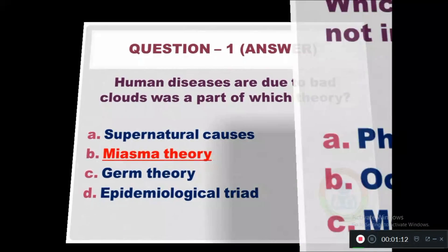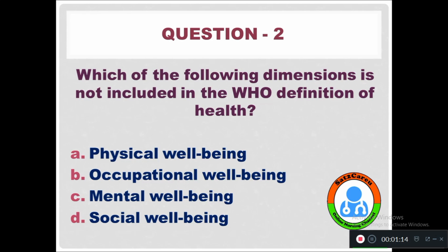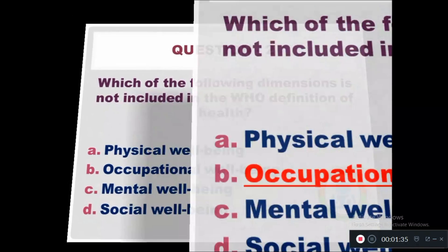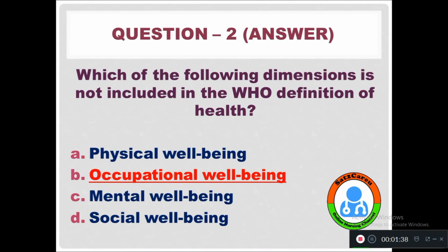Question 2: Which of the following dimensions is not included in the World Health Organization definition of health? Option A: Physical well-being. Option B: Occupational well-being. Option C: Mental well-being. Option D: Social well-being. The right answer is Option B — Occupational well-being is not included in the WHO definition of health.